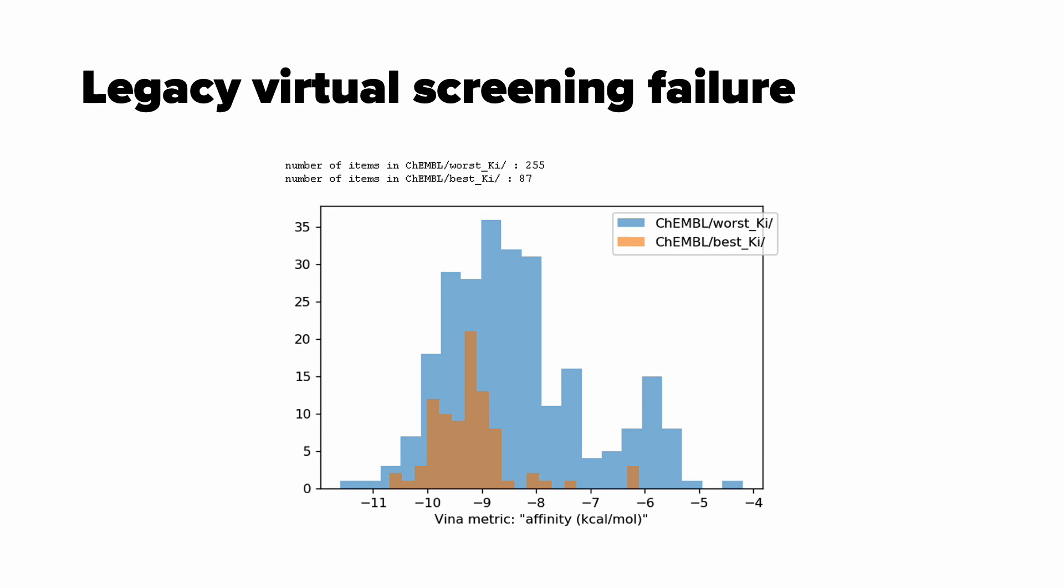Recently our group tried to separate known thrombin active and inactive ligands using all these methods. And we failed. You can see the experimental results on this picture. The ligands with high KI which are bad binders are in blue. And the best KI means low inhibition constant are in red. And we can conclude that there is no reliable separation of these ligands based on conventional virtual screening methods. It means we need something new to distinguish between active and inactive compounds to a particular receptor.